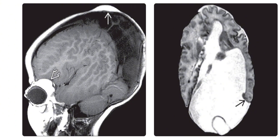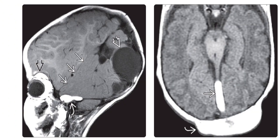The herniated ventricle is displacing the posterior aspect of the cerebral hemisphere anteriorly, thereby compressing and distorting the hemispheric parenchyma. On the left is the sagittal T1-weighted MRI showing ipsilateral orbital and middle cranial fossa lipomas. The cerebral cortex is distorted by the enlarged lateral ventricle. Also note the intracranial cyst.